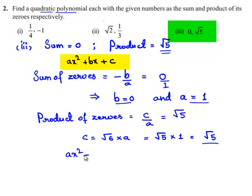So let us substitute a, b, c in ax square plus bx plus c. We'll be getting 1 times x square plus 0 times x plus root 5, which is equal to x square plus root 5.